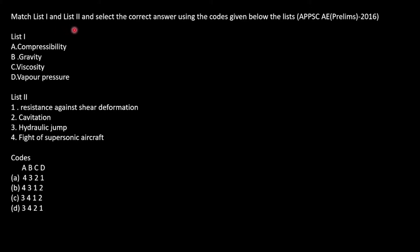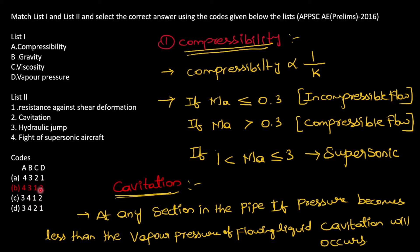Next question: match list 1 and list 2. List 1 is compressibility, gravity, viscosity, and vapor pressure. List 2 is resistance against shear deformation, cavitation, hydraulic jump, and flight of supersonic aircraft. The answer is option B: 4, 3, 1, 2. That is, compressibility matches with flight of supersonic aircraft, gravity matches with hydraulic jump, viscosity matches with resistance against shear deformation, and vapor pressure matches with cavitation.